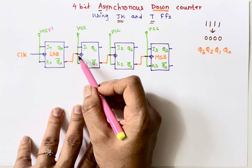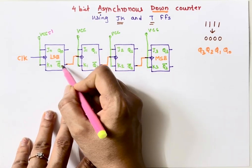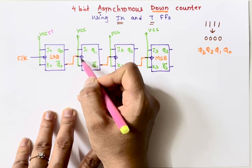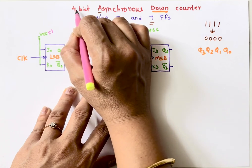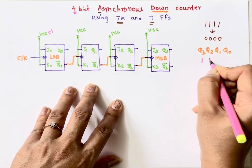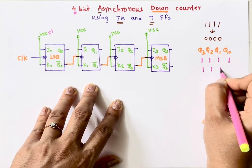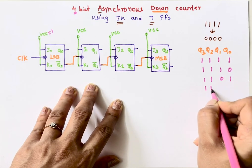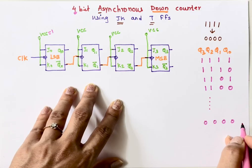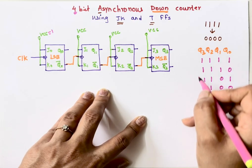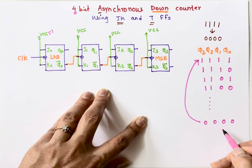So this is the down counter. In the case of an up counter, instead of Q0 bar, we connect Q0 directly to the clock input of the next flip-flop. The truth table for this four-bit asynchronous down counter starts from 1111 and goes down to 0000 — that is, 15, 14, 13, 12, and so on down to 0. Once it reaches 0000, it wraps back to 1111 and keeps repeating.